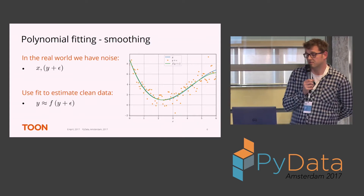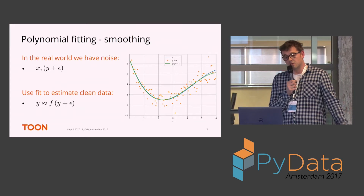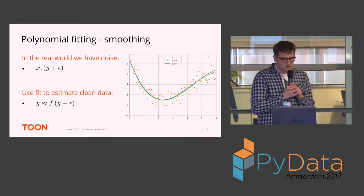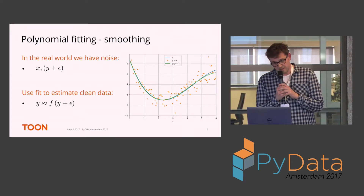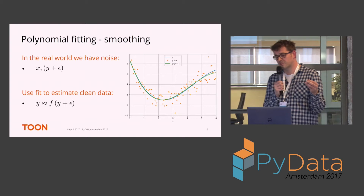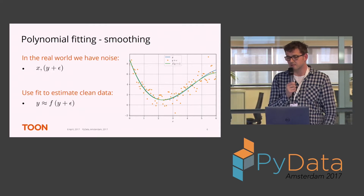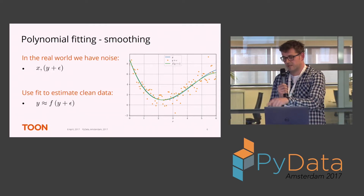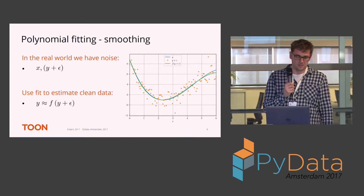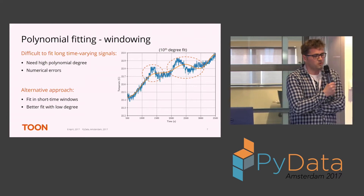Typically you don't have a clean observation of your signal — it's corrupted by noise. So we don't have access to y but only to y plus some epsilon. The nice thing about polynomial smoothing is that you can actually make an estimate of the underlying clean signal. Here in this lab example I generated y myself, but the polynomial was fitted only to y plus epsilon, and you can see the green line is nicely on top of the blue line — so somehow you got rid of the noise.